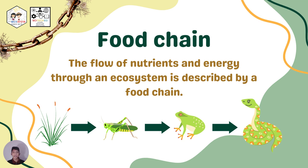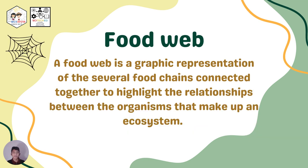Next, food chain — the flow of nutrients and energy through an ecosystem. In this example, the producer is the plant, then the grasshopper as our primary consumer, the frog as our secondary consumer, and the tertiary or third-level consumer is the organism at the top.